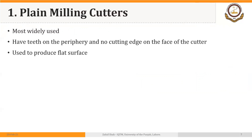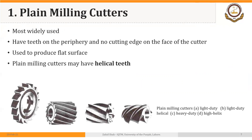First we have plain milling cutters, which are the most widely used cutters in milling. They have teeth only on the periphery and no cutting edge on the face of the cutter. You can see a light duty plain milling cutter where the teeth are only on the periphery with no cutting edges on the face. The teeth may be straight or at an angle called the helix angle. This angle can vary depending upon the application — if you want to remove more material, the angle will increase. In all these cases, the cutting edges are on the periphery, not on the face.